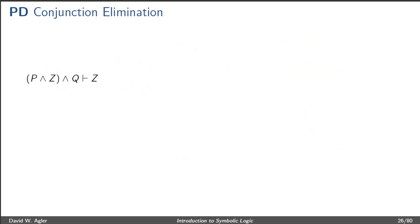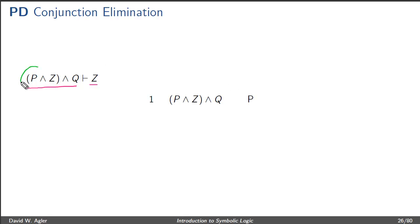So let's look at a particular example of conjunction elimination in a proof. Let's say we have an entailment: P and Z and Q entails Z, and we want to provide the derivation or proof of this. We start by setting up the proof — we simply write down the formula to the left of the turnstile, that is P and Z and Q, and indicate that it is a premise.